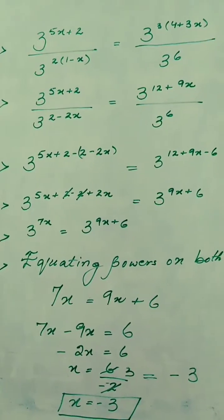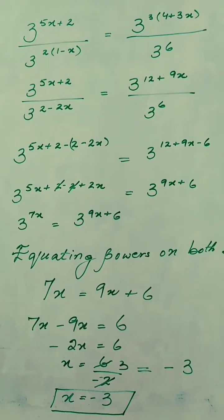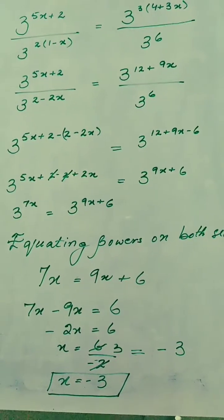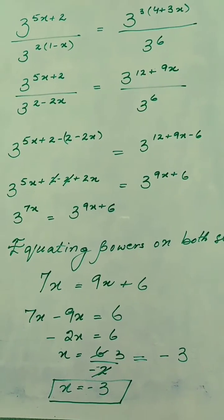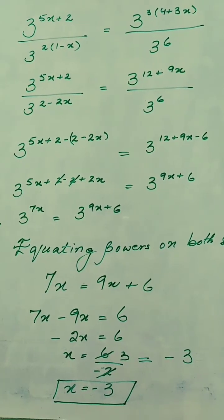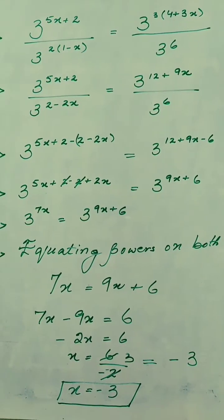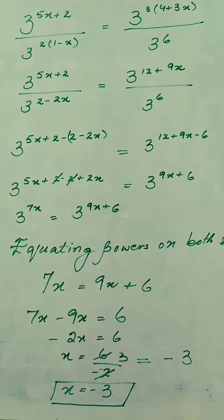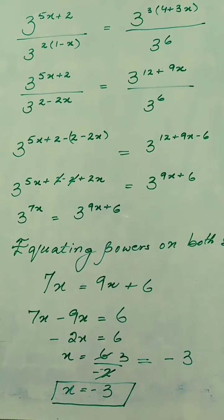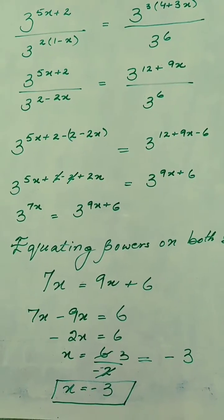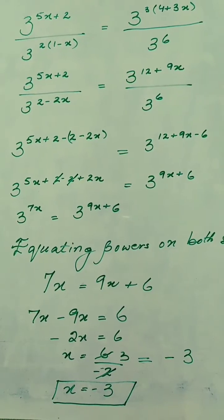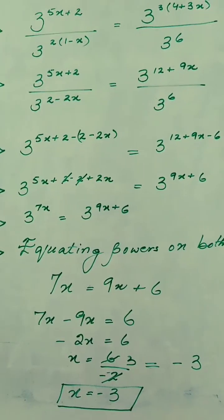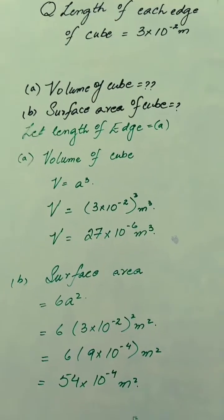Now we have 3 to the power (7x) equals 3 to the power (9x+6). Since the base is the same, we equate the powers: 7x = 9x + 6. Taking the x terms to one side: 7x − 9x = 6, which gives −2x = 6. Dividing both sides by −2, we get x = −3.